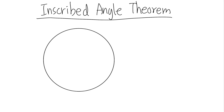Today let's talk about a very useful theorem in geometry called the inscribed angle theorem. Suppose we have a circle with the center marked. Let's form a central angle — say this angle is 80 degrees — and notice how we have formed this arc right here.